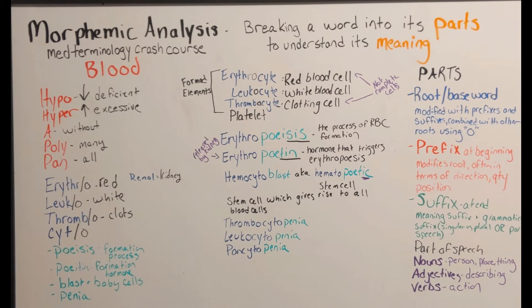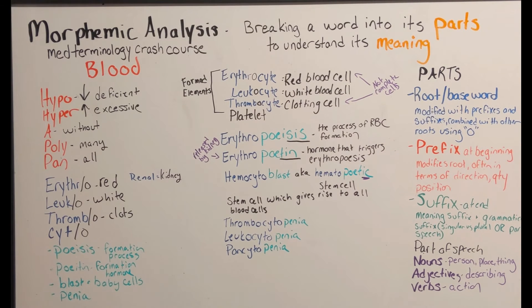Thrombocytopenia, leukocytopenia, pancytopenia — what does -penia mean? Penia is a deficiency or a weakness. Thrombocytopenia is a deficiency in platelets, leukocytopenia is a deficiency of white blood cells, and pancytopenia — since pan means all — is a deficiency of all of your blood cells.